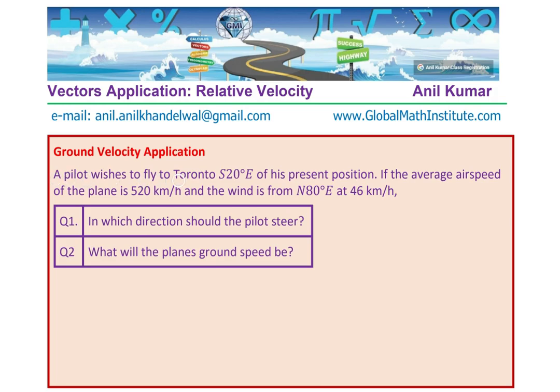A pilot which is to fly to Toronto, south 20 degrees east of its present position. If the average airspeed of the plane is 520 kilometers per hour and the wind is from north 80 degrees east at 46 kilometers per hour, in which direction should the plane steer? That is a test question for you. You can apply the knowledge and then get into this.